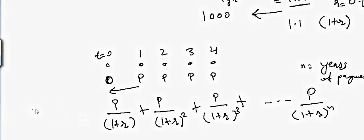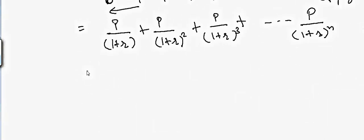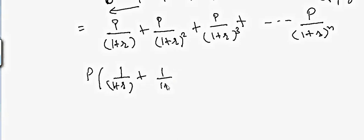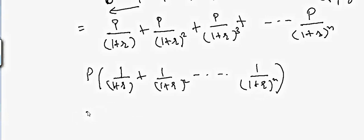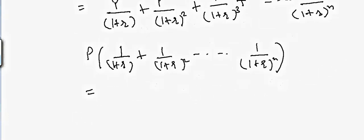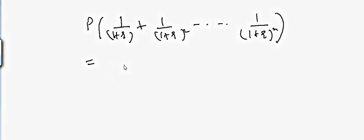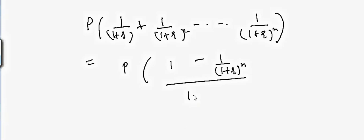We can factor out P and write the series as P times [1/(1+r) + 1/(1+r)² + ... + 1/(1+r)^n]. This is a geometric series, which solves to: P times [1 minus (1+r)^(-n)] divided by [1 minus 1/(1+r)]. This is the formula for the present value of an annuity.